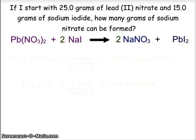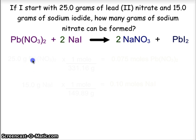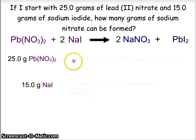In class, we looked at making double-doubles and chocolate chip cookies, and we saw that there is always going to be one part of the recipe that limits us because we run out of that one first. So in stoichiometry, we are going to take those two values and convert them to moles.